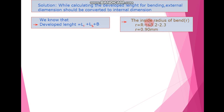First, we calculate the inside radius of the bend, represented as small r. The formula for small r is capital R minus small t. By putting in the values of capital R and t, we get the inside radius of the bend as 0.9 mm.